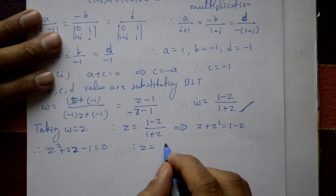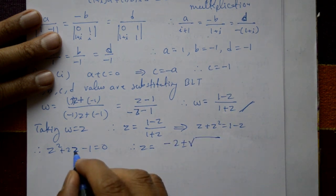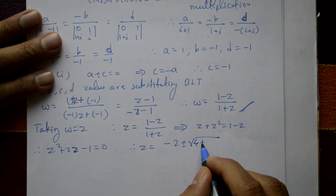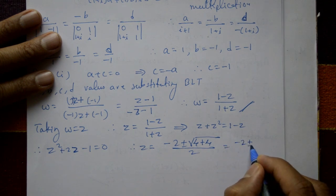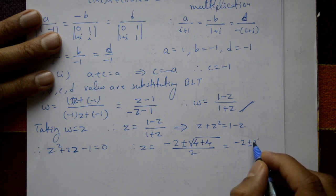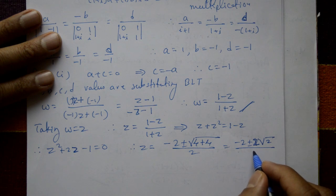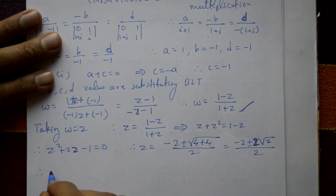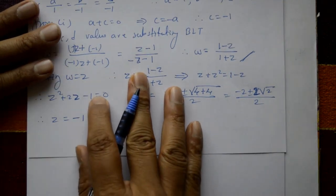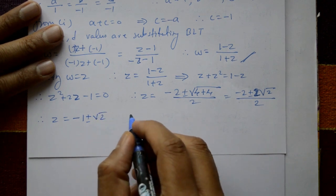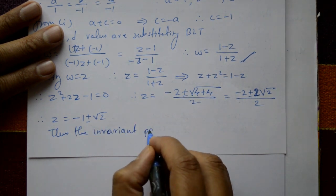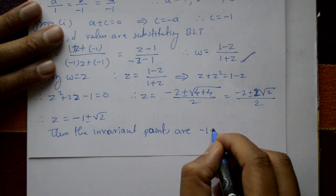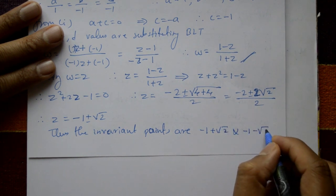Solving using the quadratic formula: z equals (minus b ± √(b² - 4ac)) / 2a, where b equal to 2, a equal to 1, c equal to minus 1. So z equals (minus 2 ± √(4 + 4)) / 2 equals (minus 2 ± √8) / 2 equals (minus 2 ± 2√2) / 2 equals minus 1 ± √2. Therefore the invariant points are z equal to minus 1 plus √2 and z equal to minus 1 minus √2.